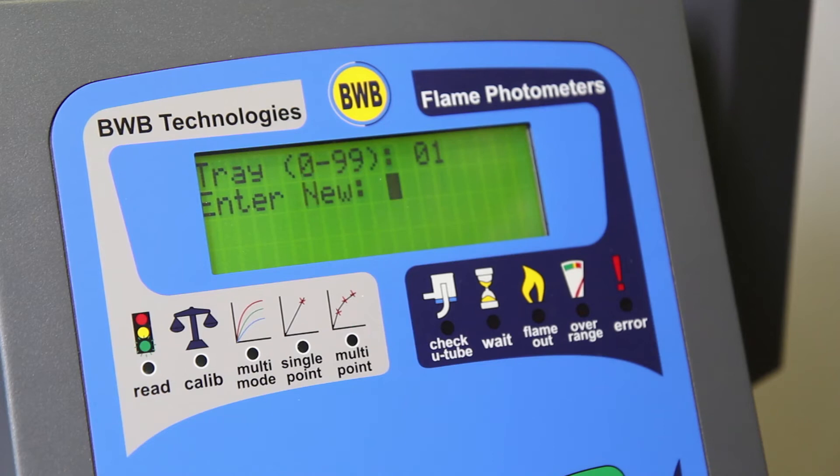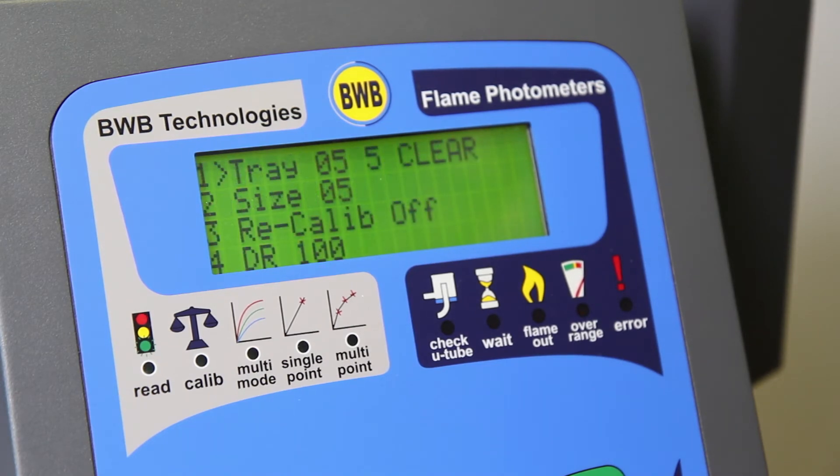A tray ID number 0 to 99 can be entered for future reference. The size of the tray 1 to 89 is the number of samples to be tested.